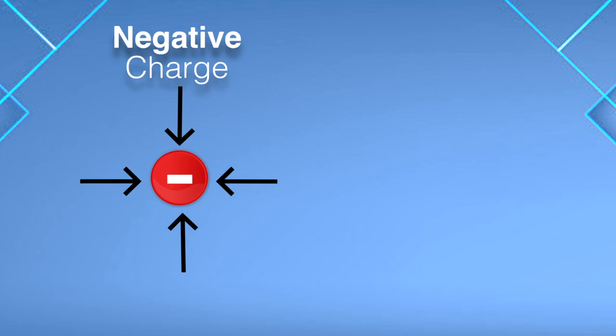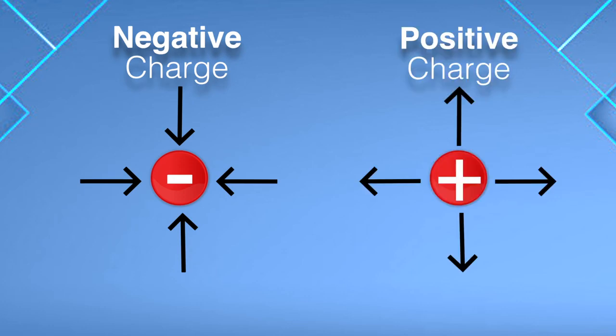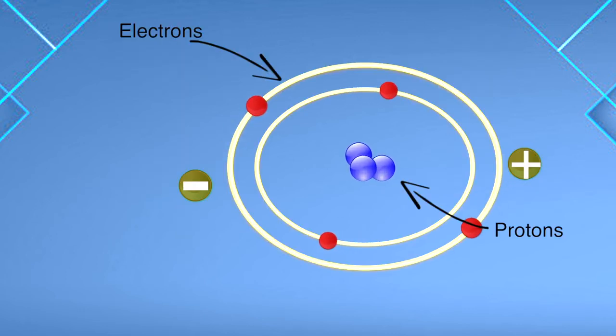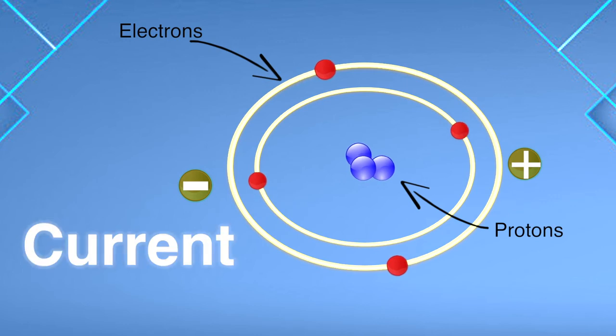One object develops a negative charge and the other develops a positive charge. And you know that opposites attract. So the electrons rush towards the protons making current. But the minute they meet, the current fades.